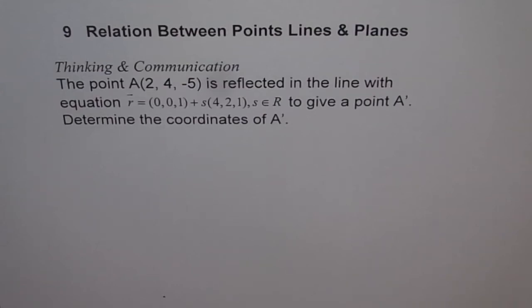Chapter 9, relation between points, lines and planes. This is a thinking and communication problem. The point A(2, 4, -5) is reflected in the line with equation r = (0,0,1) + s(4,2,1), where s belongs to real numbers, to give a point A'. Determine the coordinates of A'.